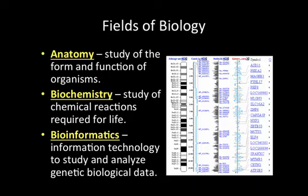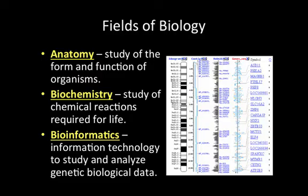Bioinformatics is a relatively new field of biology. Bio means life and informatics looks like the word information — it involves a lot of data and numbers, and it has to do with information technology. We analyze genetic and biological data. Looking at the picture on the right, that is a chromosome which contains DNA and genes. We look for different patterns in the DNA and try to understand what segments of DNA code for what genes, such as diseases or other traits.